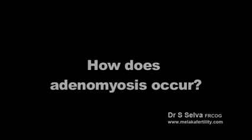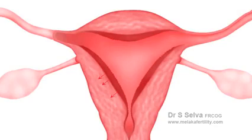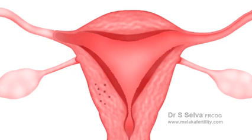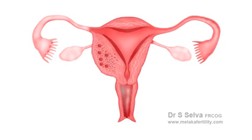How does adenomyosis occur? When the endometrium penetrates the myometrium, endometrial tissues get deposited in the myometrium. It causes the myometrium to enlarge and adenomyosis occurs. The endometrial tissue in the myometrium can grow and bleed.